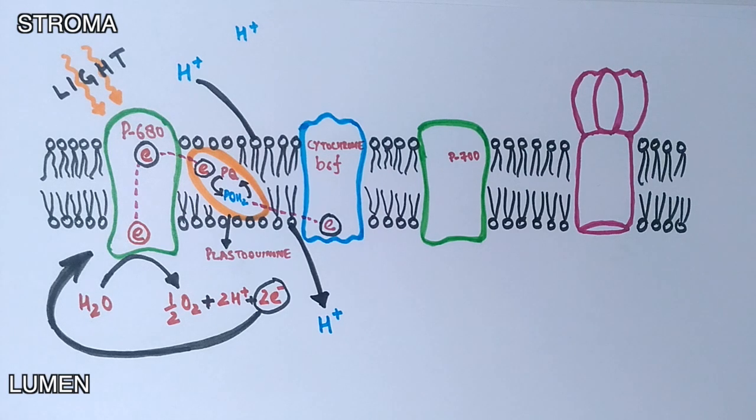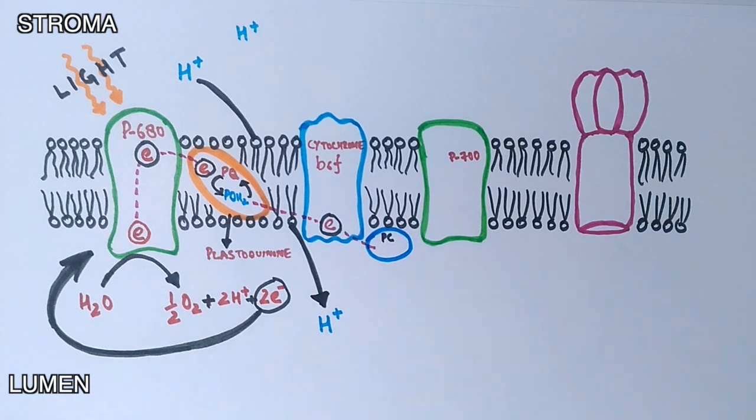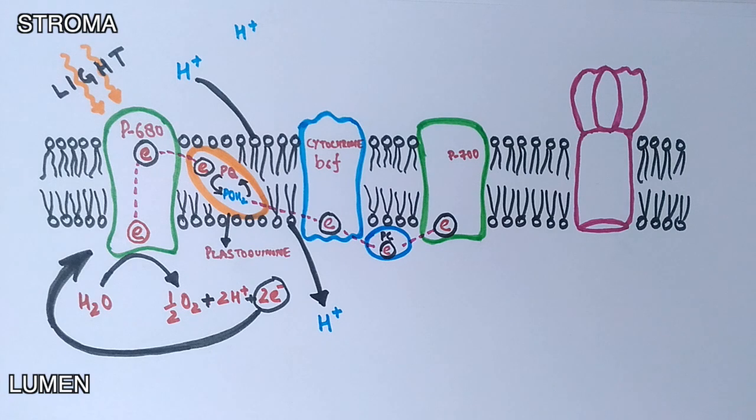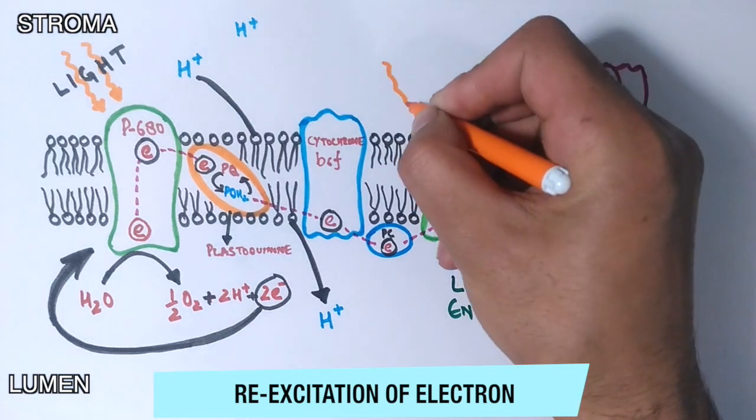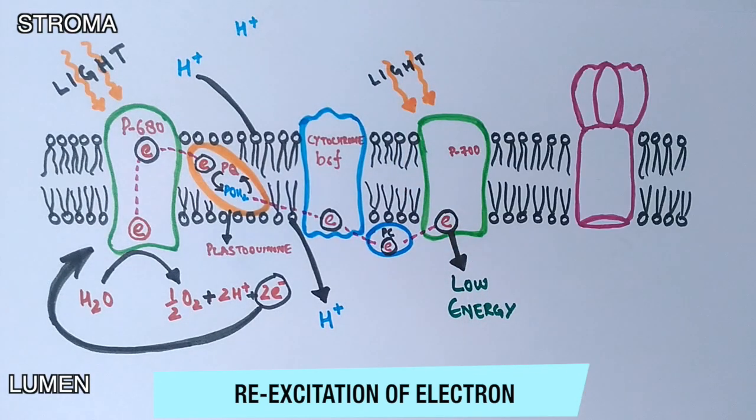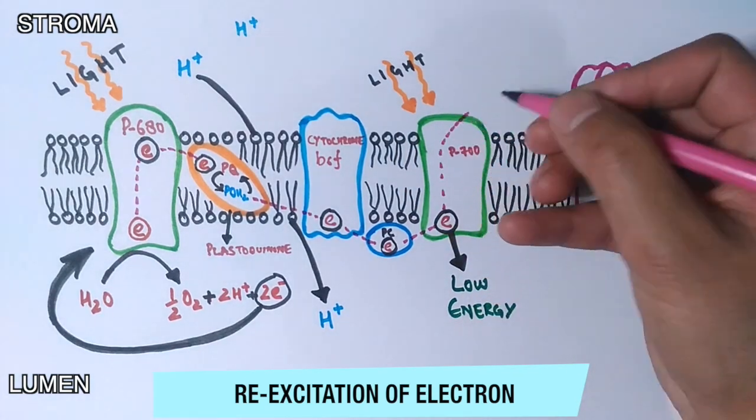After that, this low-energy electron is carried towards another photosystem called photosystem 1 by the mobile carrier protein called plastocyanin. Here in photosystem 1, the electron has low energy and gains energy when the photosystem 1 molecule absorbs light energy again and excites the electron back to the higher energy state.